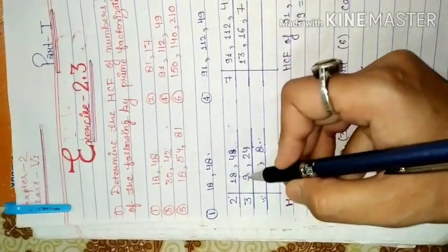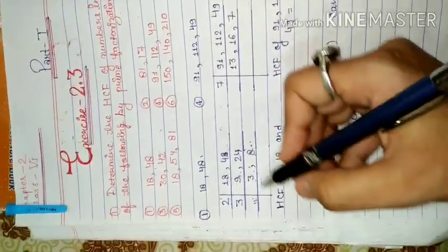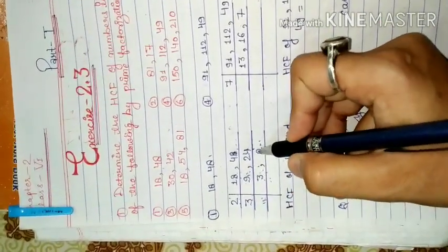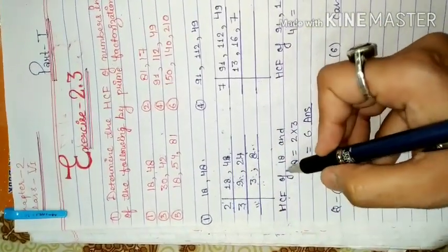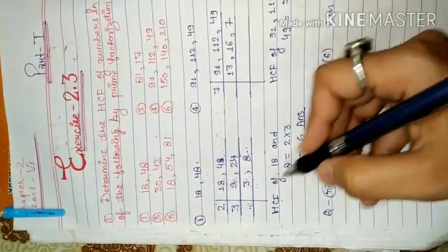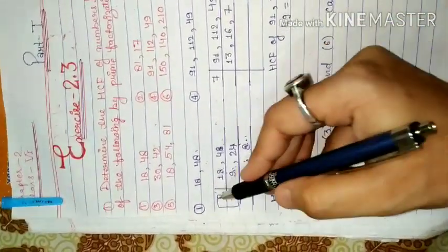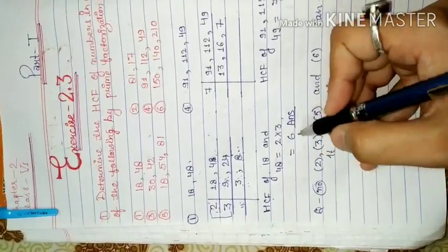18 and 48, both have been in the table. 9 and 24, both have been in the table also. The HCF of 18 and 48 is 2 multiplied by 3, which is 6. The answer is 6.